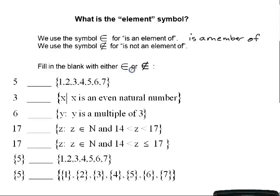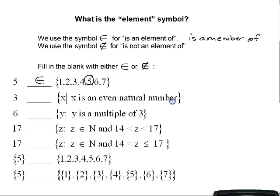Let's fill in the blank for each of the following with either 'is an element of' or 'is not an element of.' The first question is: is 5 a member of the set {1, 2, 3, 4, 5}? 5 is inside this set — it is listed as a member — so 5 is an element of this set.